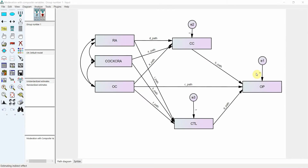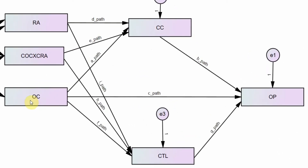In the last session on Moderated Mediation Analysis, we had one indirect effect from OC to OP through CC. However, in this example, I have got two indirect effects: one from OC to OP through CTL and the other one from CC. I have one moderating variable RA, and I am interested in finding out whether this indirect relationship from OC to OP through CC and CTL is being moderated by RA — that is Moderated Mediation, the indirect effect being moderated and the moderator is RA.